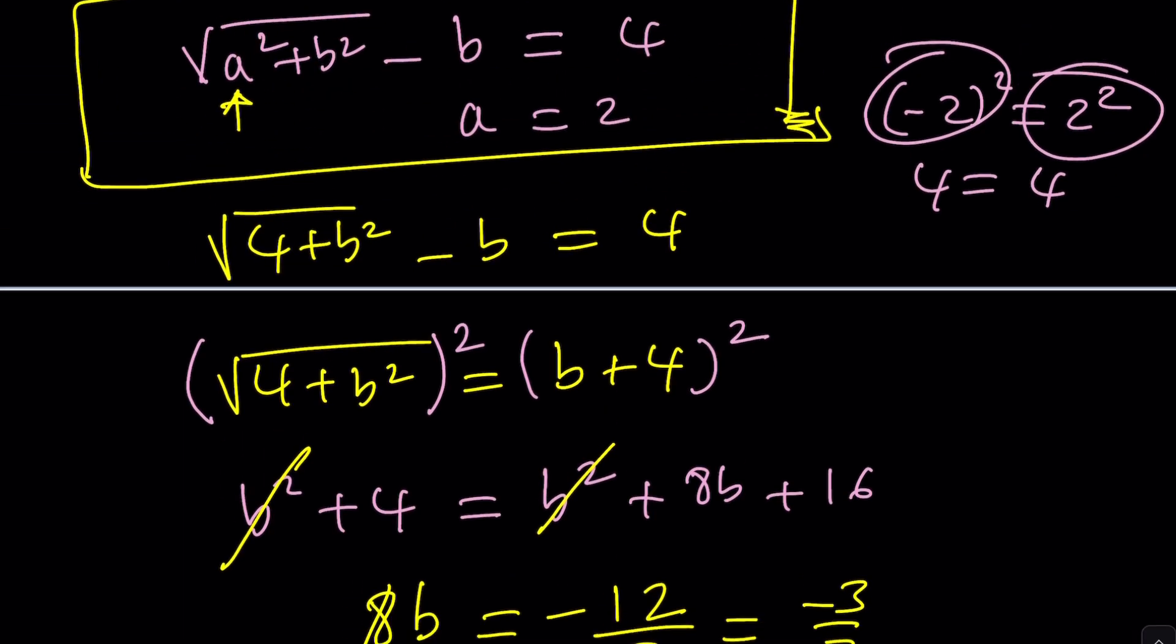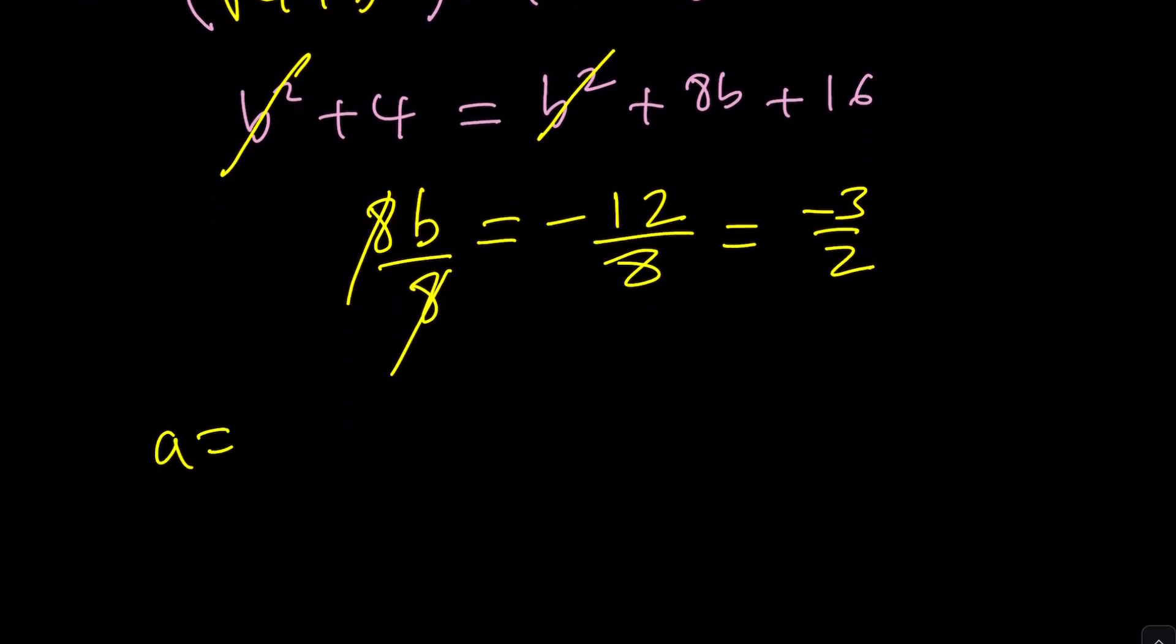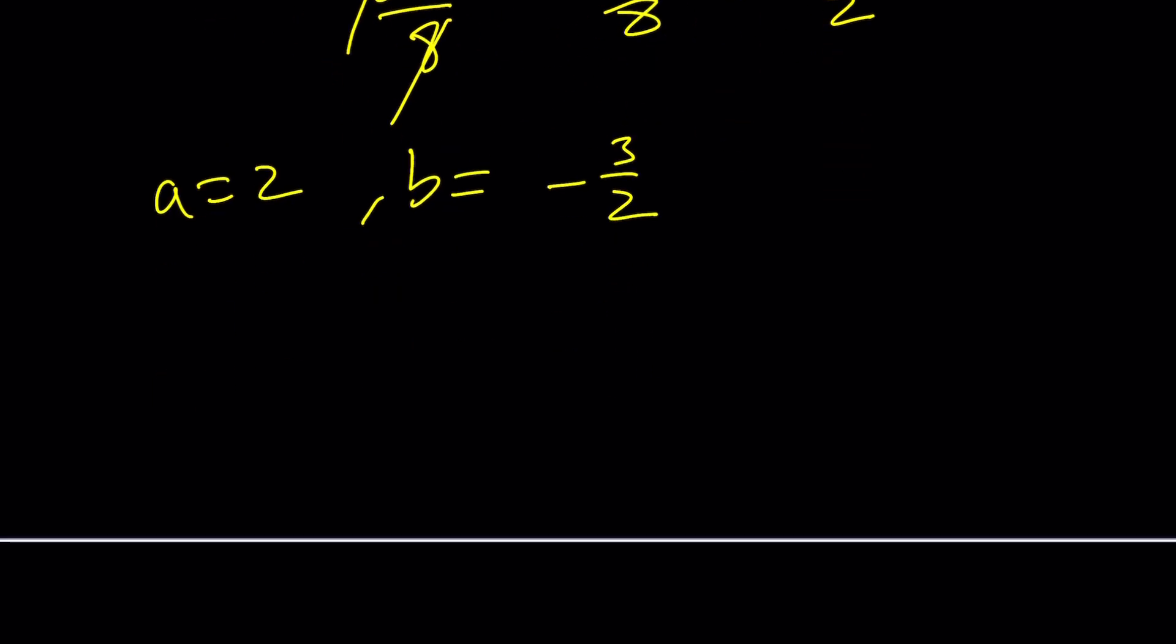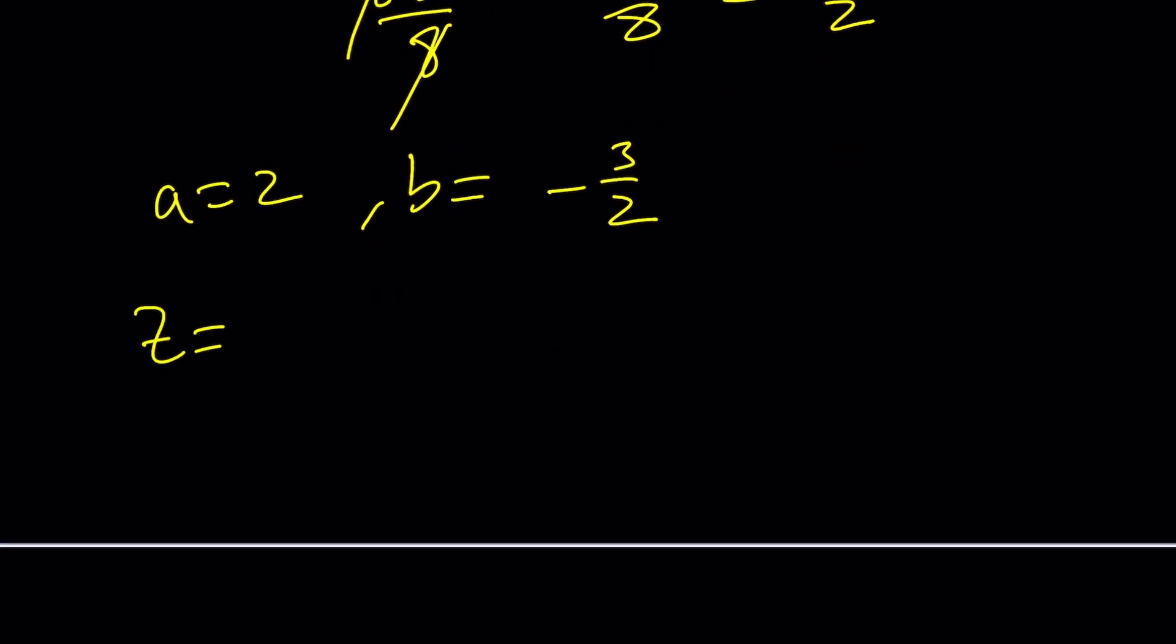What is a? a is 2. We already know that. a is 2, b is negative 3 halves. So how do you write the solution? z equals a plus bi which is 2 minus 3 halves of i. I usually expect to get two solutions for these kinds of equations, but I guess sometimes you only get a single solution.